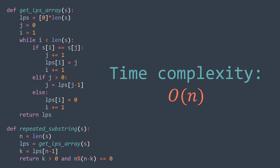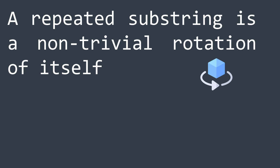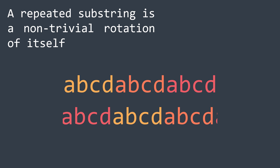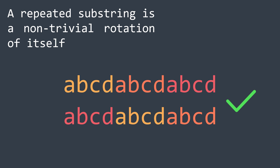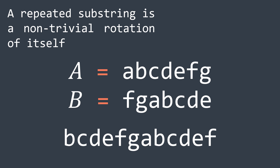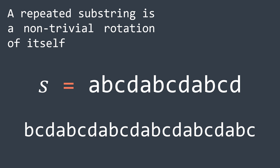We also have a third solution. A repeated substring is a non-trivial rotation of itself. For example, rotating ABCDABCDABCD by some characters gives ABCDABCDABCD again. So we just need to check if s is a non-trivial rotation of itself. To check if string B is a non-trivial rotation of string A, we concatenate A to itself, remove the first and last character, and search for B inside. In our problem, s is both A and B, so we concatenate s to itself, remove the first and last character, and search for s inside.